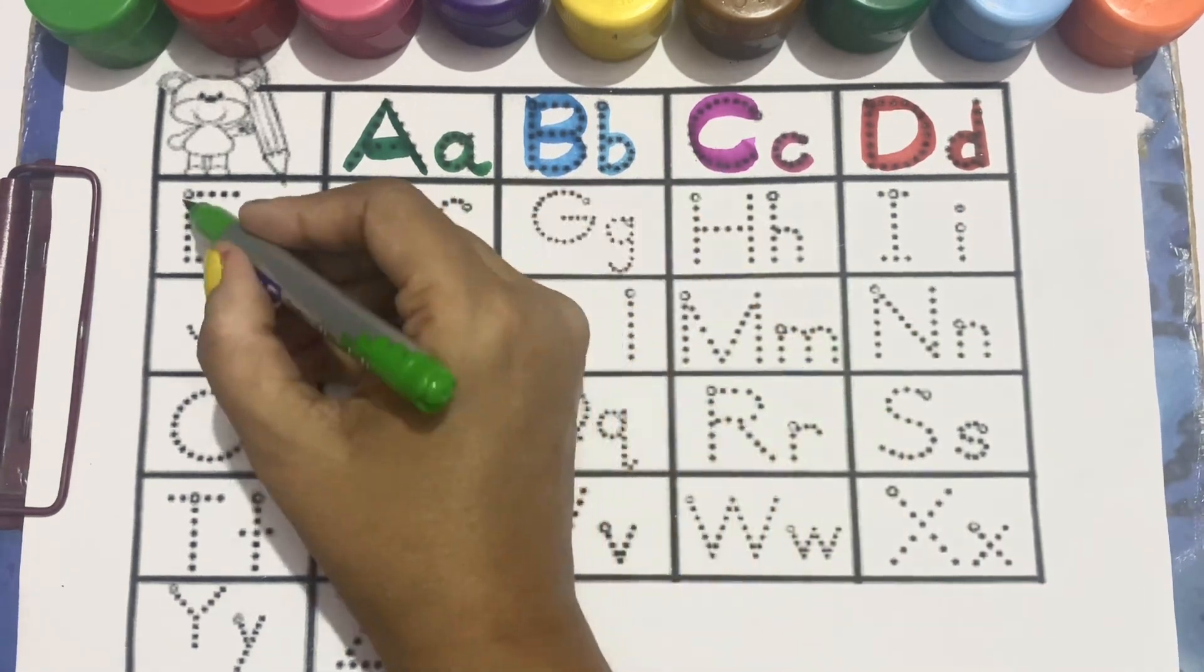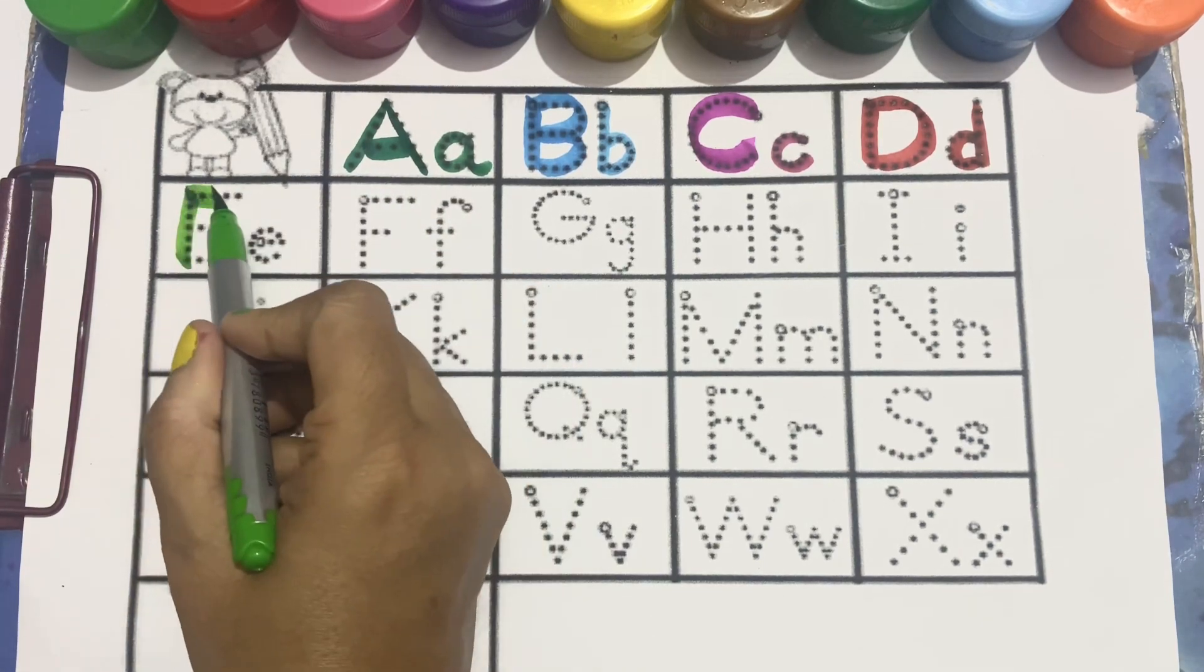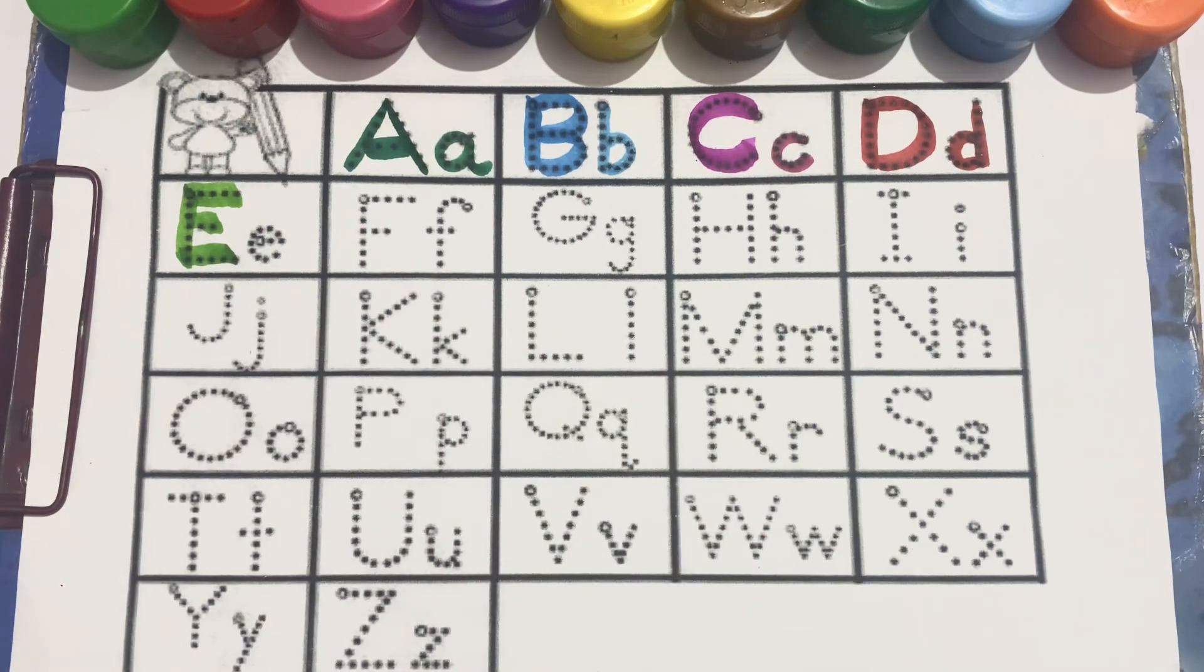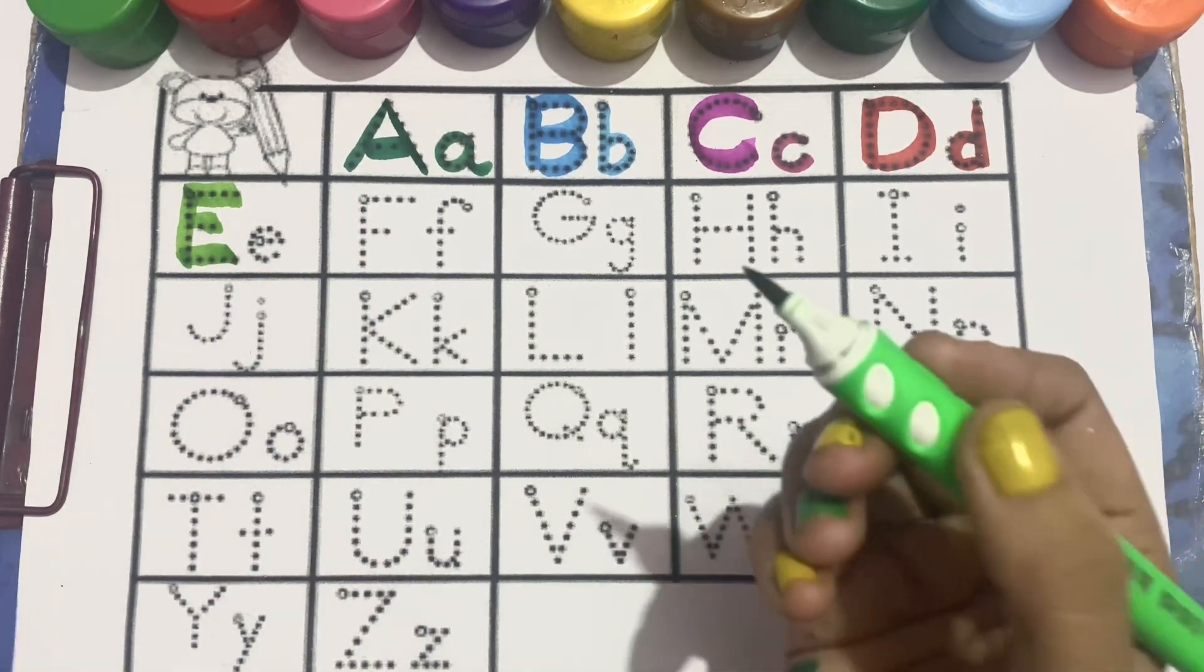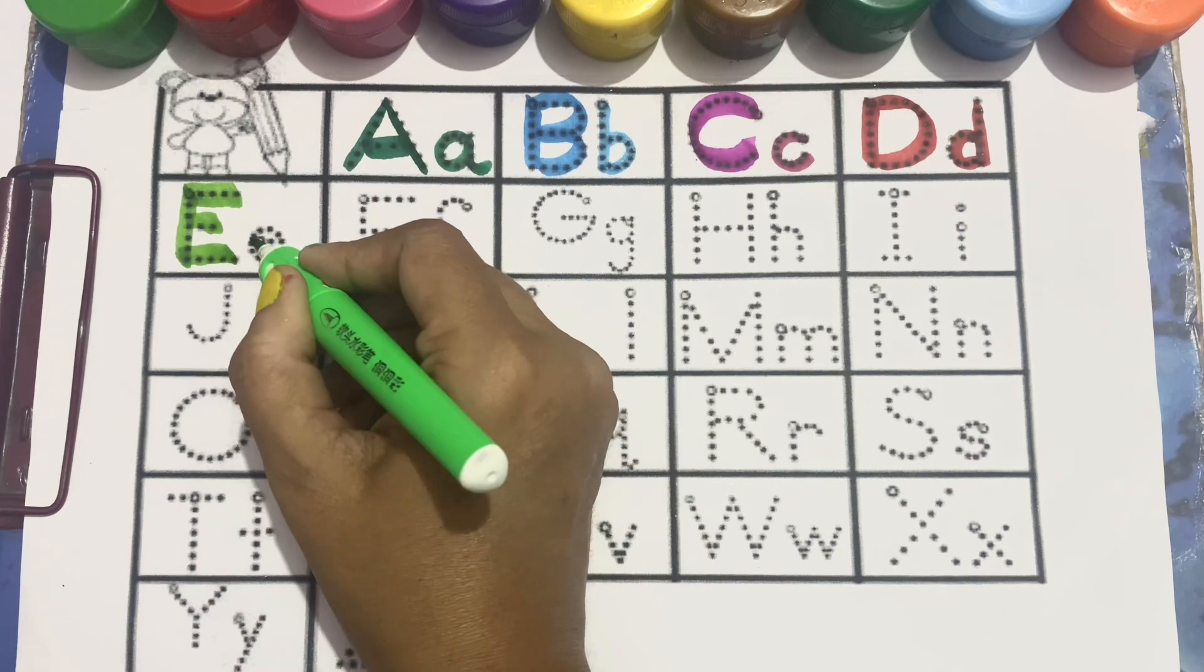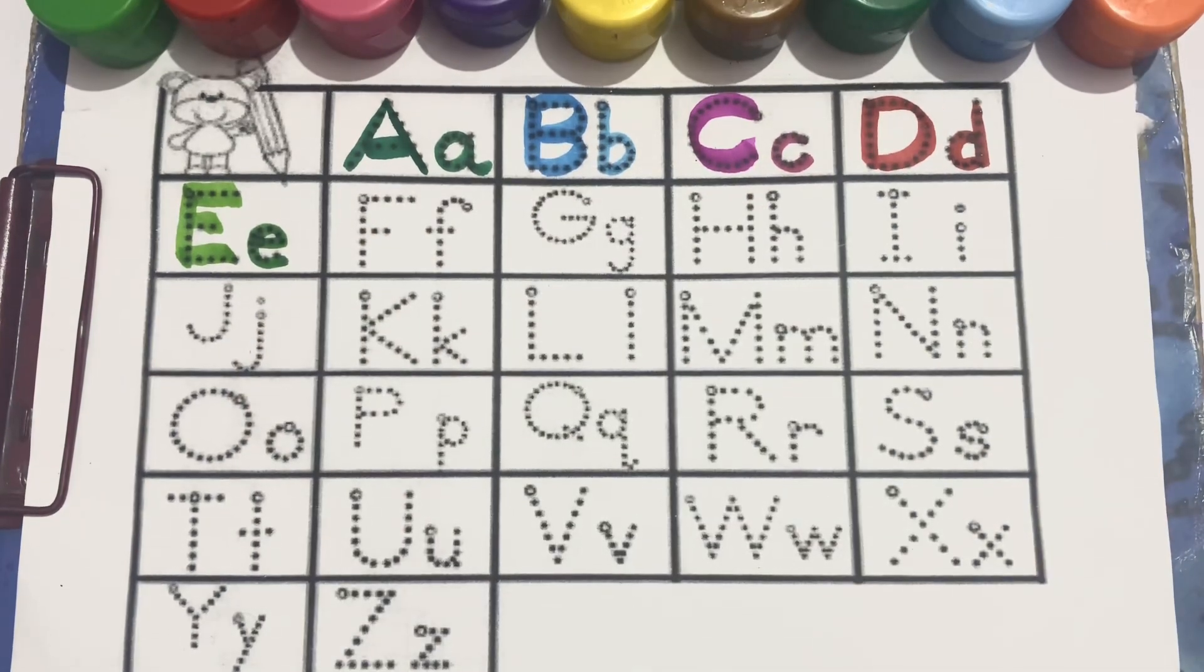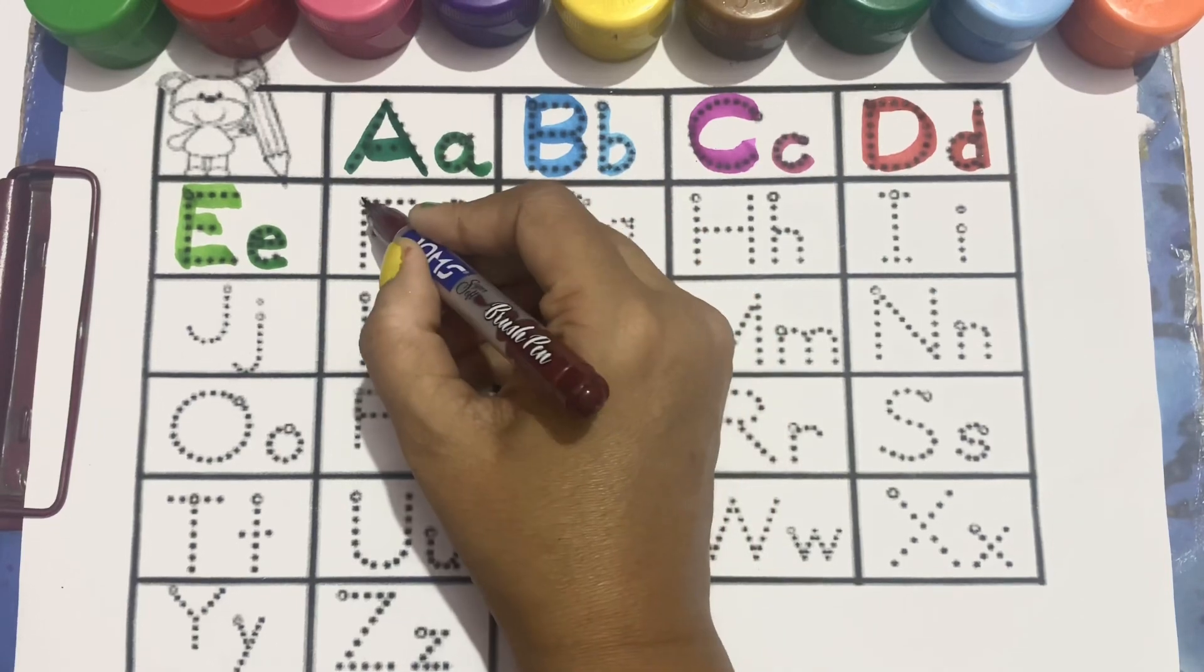Parrot color, E. Capital E. Now, small d. Brown color.